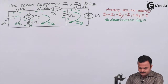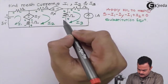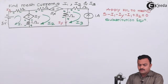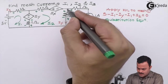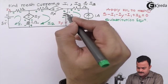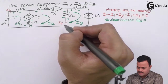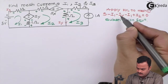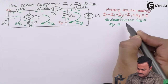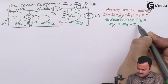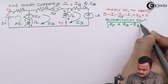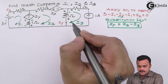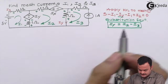Looking carefully at the circuit, iy is this branch current. This branch current consists of two loop currents — i2 and i3 — in opposite directions. iy is given in a downward direction and i2 is flowing in the outward direction, so iy matches with i2. Hence i2 is dominating, and we have the substitution: iy = i2 minus i3.